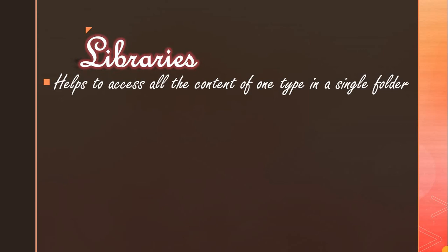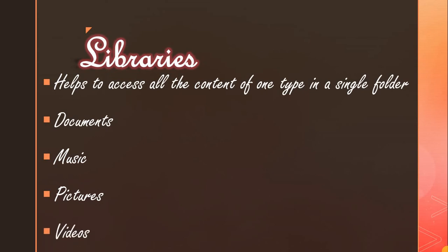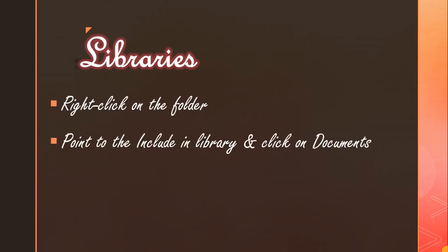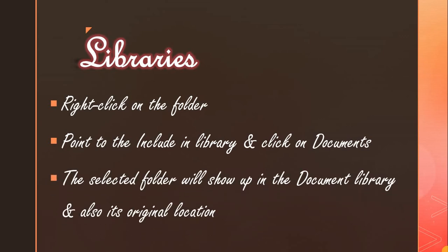Next, Libraries. Libraries help you access all content of one type through a single folder. This is a new feature of Windows 7. It has four default libraries: Documents, Music, Pictures, and Videos. To access a file from a library, first add it into the library. To add a folder to the Documents library, right click on the folder and move the pointer to Include in Library on the short menu. That selected folder will show up in the Documents library as well as its original location.